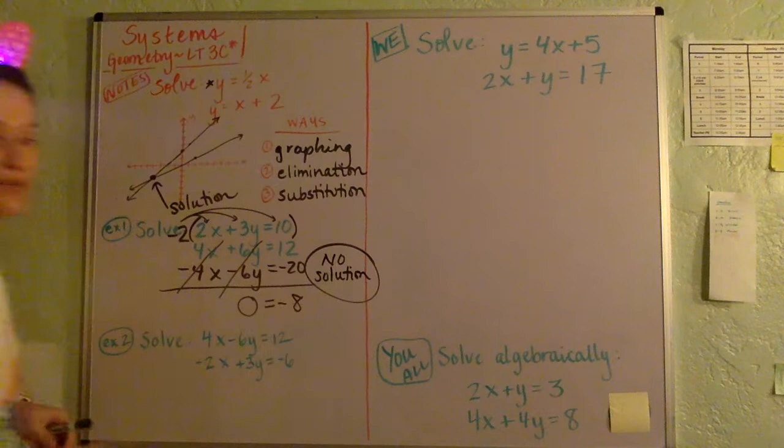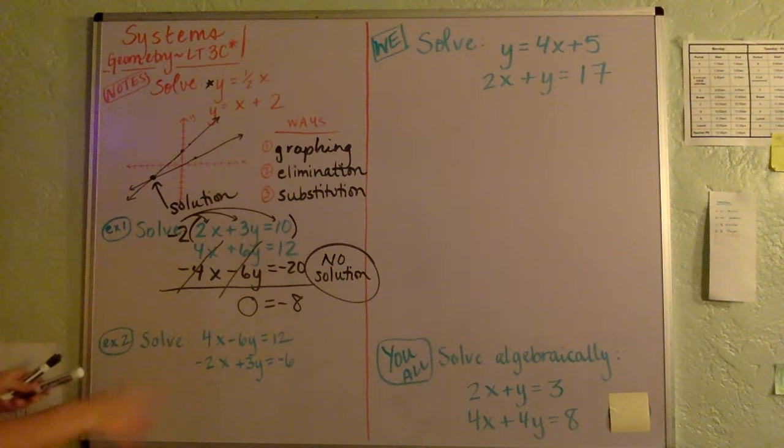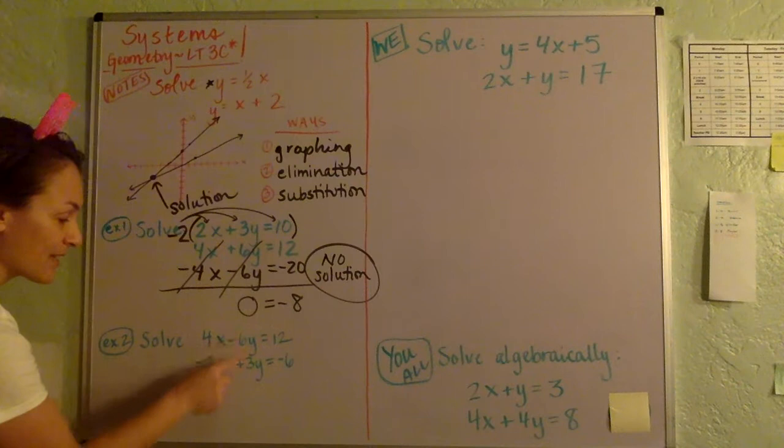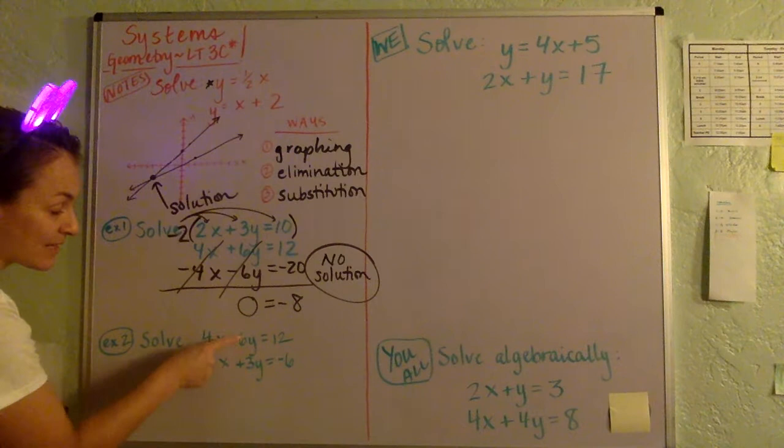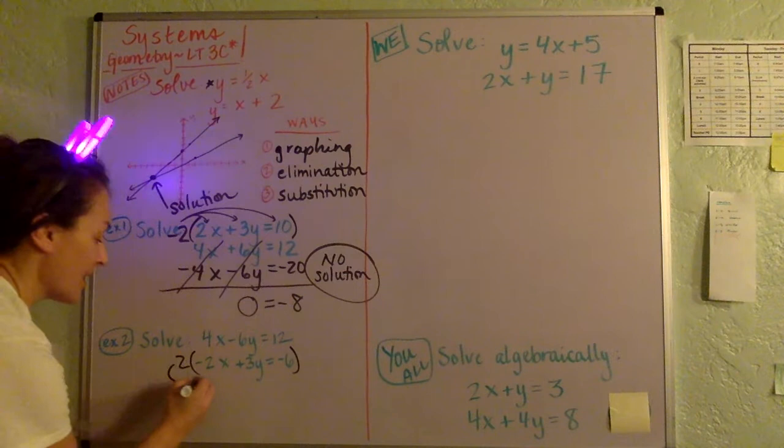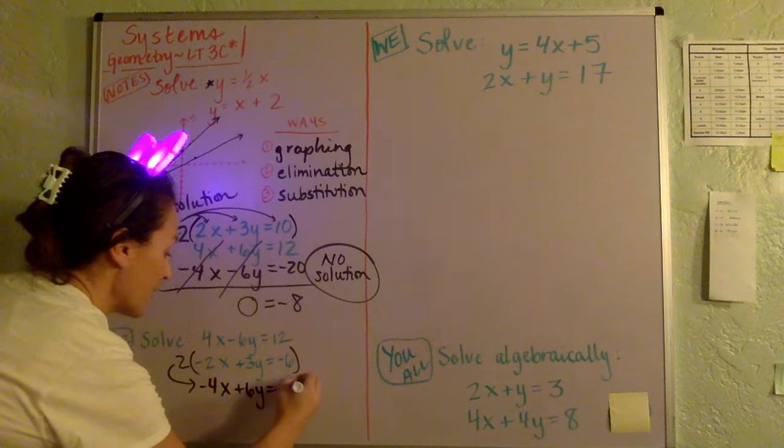Let's take a look at the next one. I'm going to again try and use the elimination technique, and I'm going to get, this time I'm going to see if I can get the Y's to cancel. So if this was just multiplied by 2, that would make this a 6Y, and then when we add those together, they'll cancel. So I'm going to multiply by 2. And so that's going to make a negative 4X plus 6Y equals negative 12. Now I'm just going to rewrite the top equation underneath it.